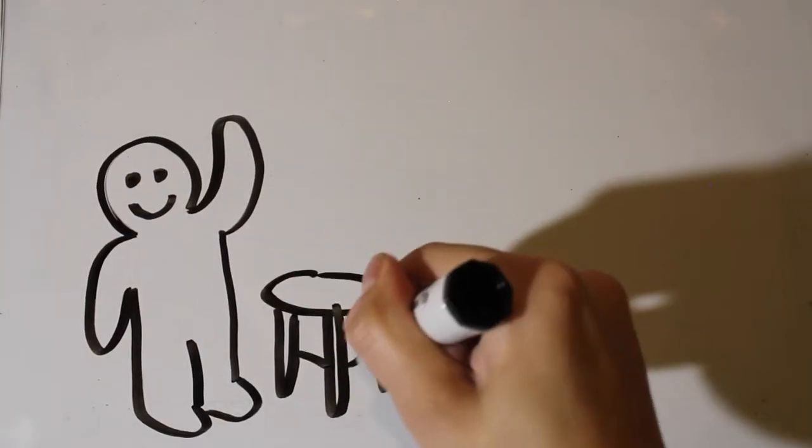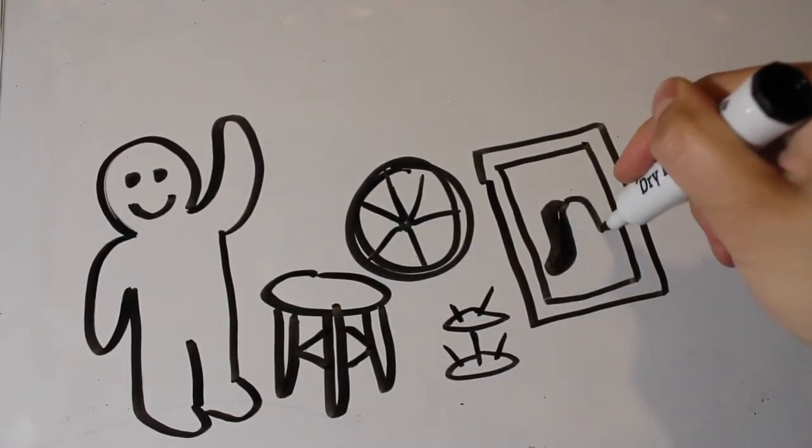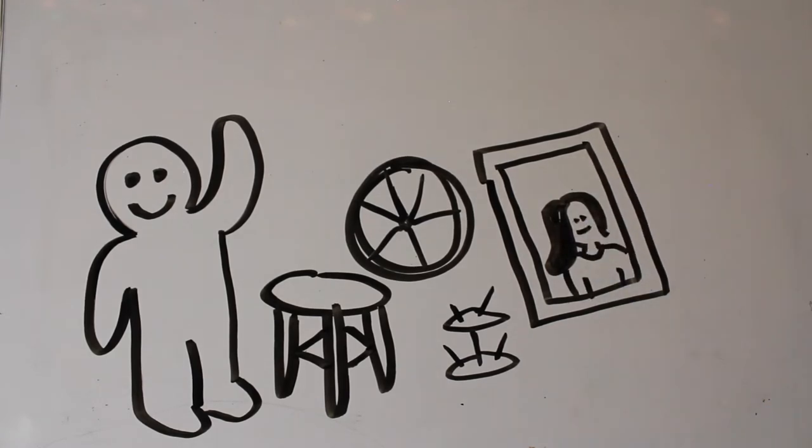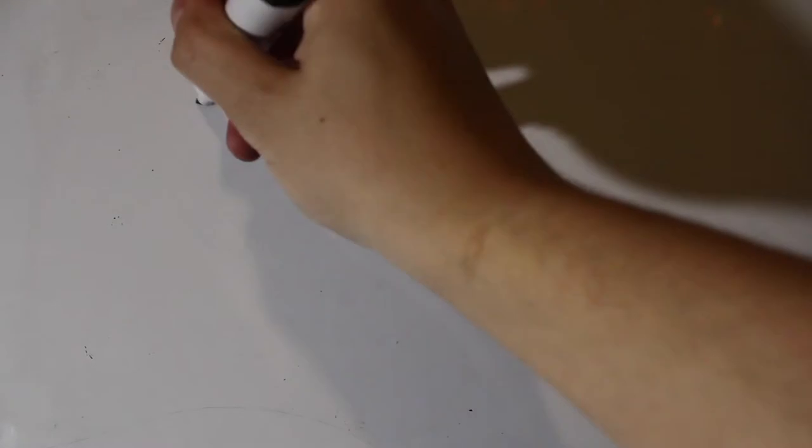Marcel Duchamp was one of the most notable artists of this period. He has created pieces using stools, bicycle tires, a bottle rack, other people's artwork, and my favorite, a urinal.